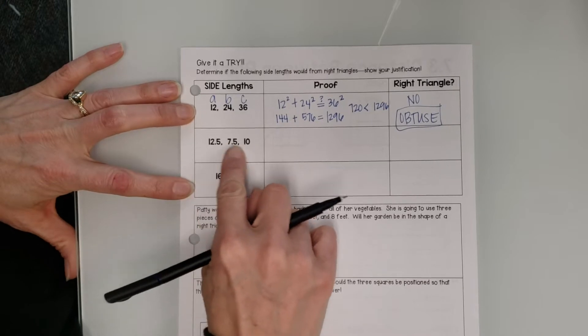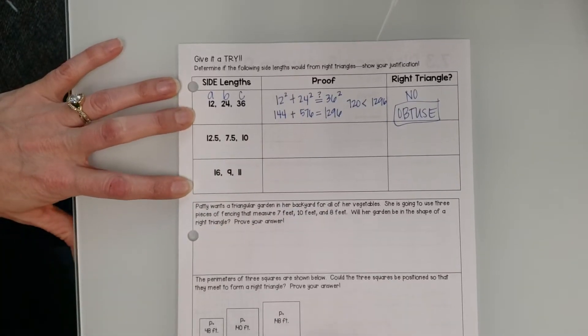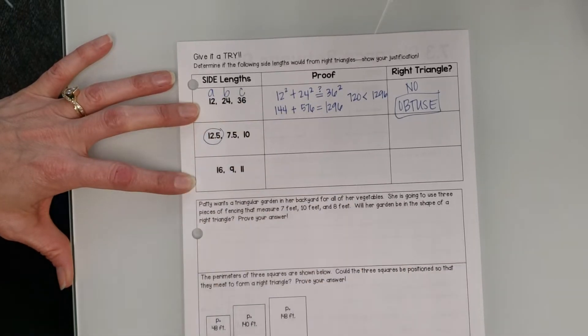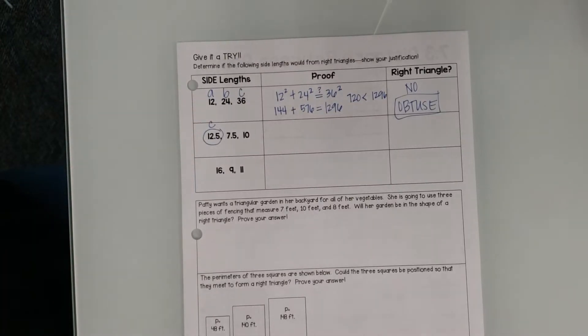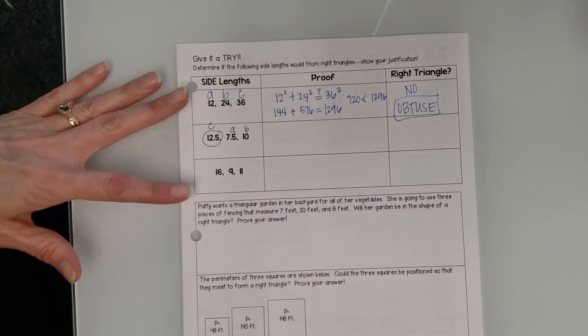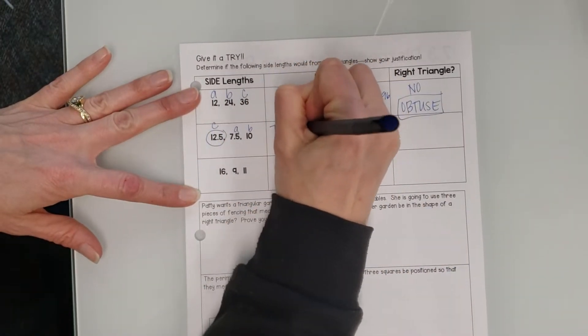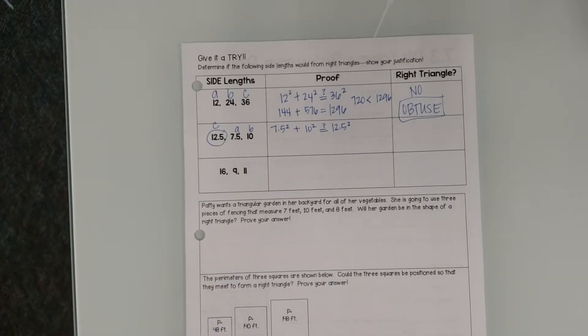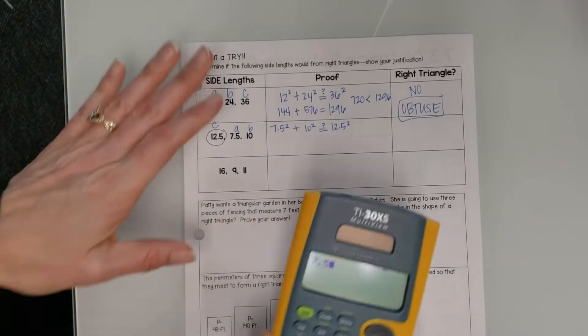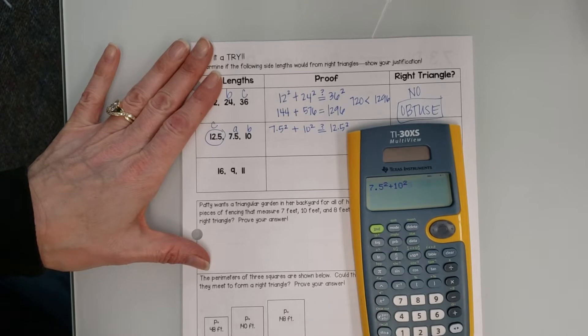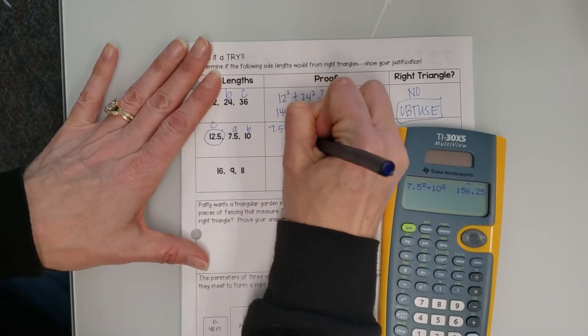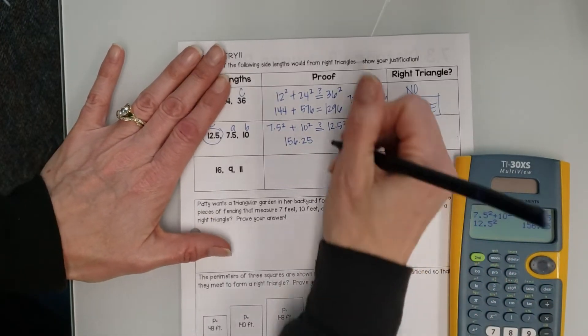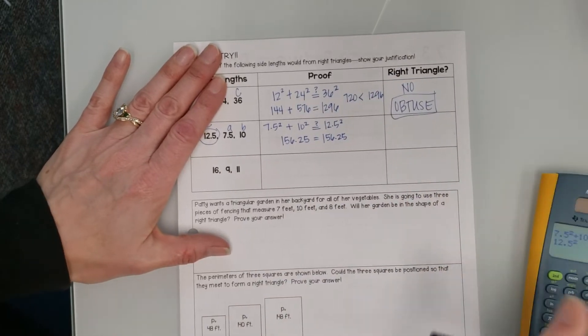So again, we're just trying to determine if these sides create a right triangle. One thing I noticed in all my other classes was that a lot of them just keep assuming that this last one is the biggest one, but it's not. 12.5 in this case is the biggest one, and so that one is C. Don't make the mistake of just assuming they're in numerical order. So then this one would be A and B or vice versa. When I put this together, I have 7.5 squared plus 10 squared, and I want to know does that equal 12.5 squared. I'll grab my calculator. So 7.5 squared, and I'm just going to go to 5.5. Okay, so that means that these are equal and that means that this is a right triangle.